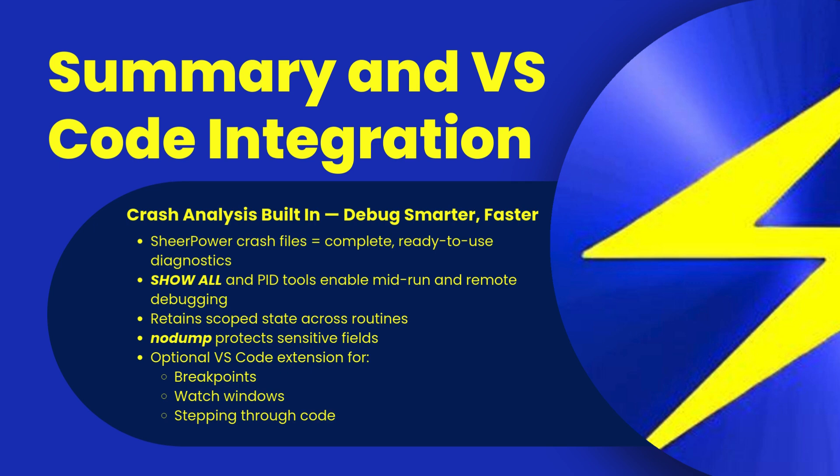With the show-all command, you can capture a live snapshot of your application while it's still running — perfect for diagnosing intermittent bugs or logging state during key decision points. And if your program hangs or gets stuck in an infinite loop, you're still in control. Just issue a remote debug trigger using the program's process ID. ShearPower's background thread ensures you get a full report, even when the main code is frozen.